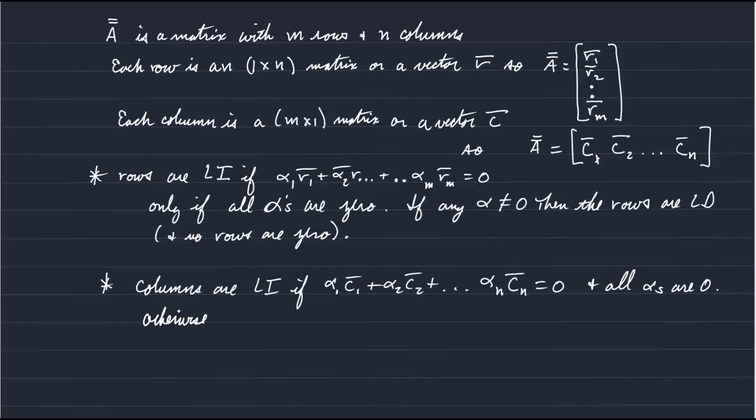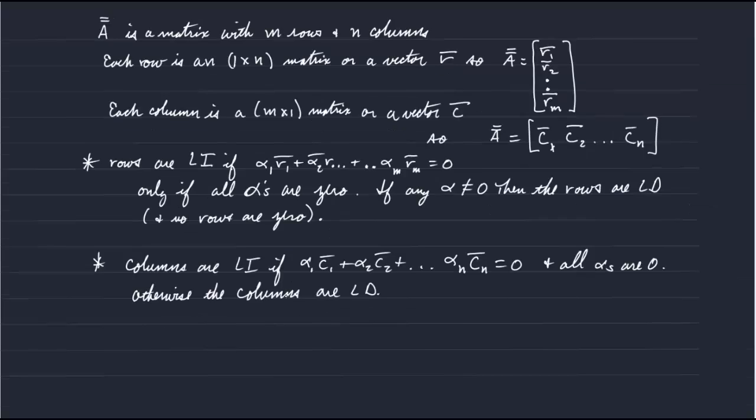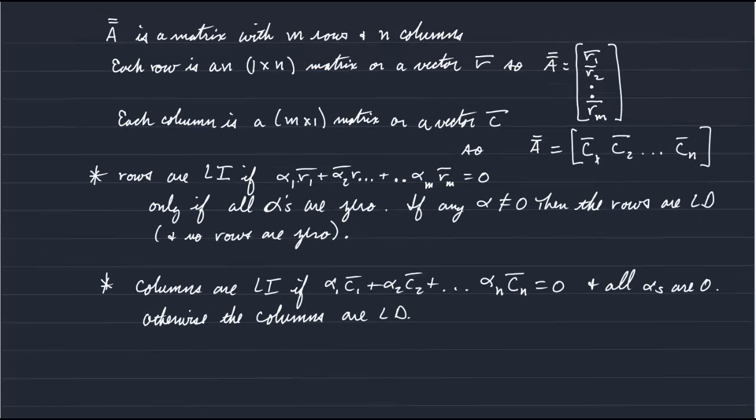Otherwise, the columns, the set of columns are linearly dependent, LD. This formal definition of linear independence can be described as: if there are any combinations of, linear combinations of two or more vectors that cancel each other out, or that cancel out another vector with non-zero coefficients, then the set is linearly dependent.